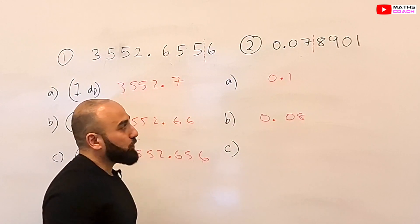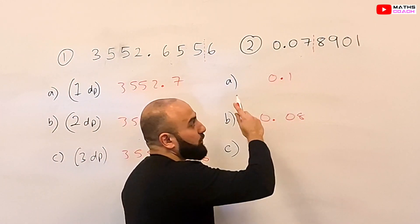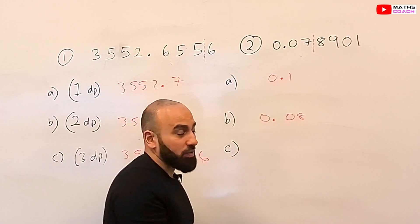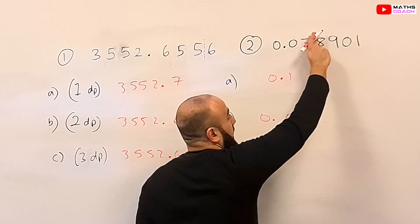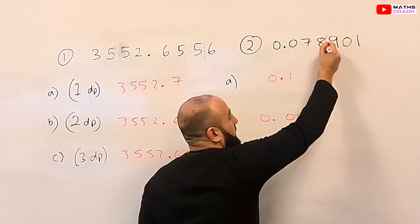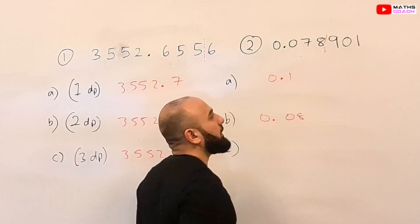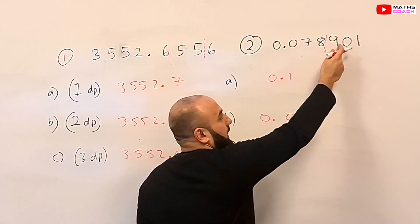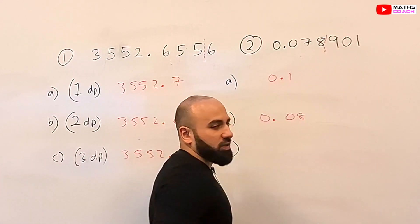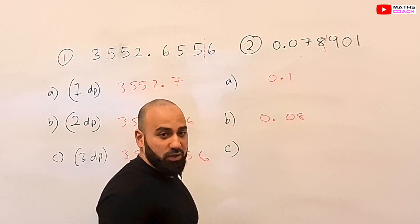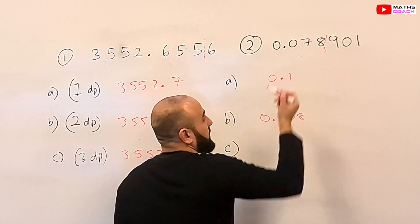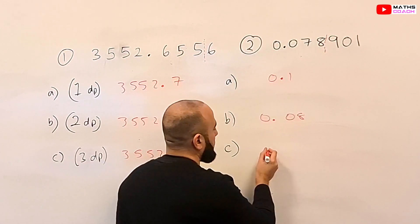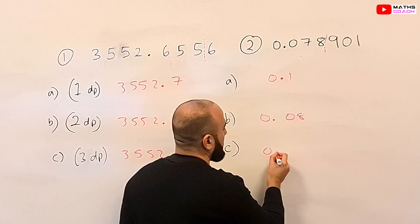For the last part, we round to three decimal places. Instead of drawing a line after the second digit, we draw a line after the third digit and look at the number next to the 8, which is a 9. Because it's 5 and above, we'll increase the 8 to a 9. So the answer is 0.079.